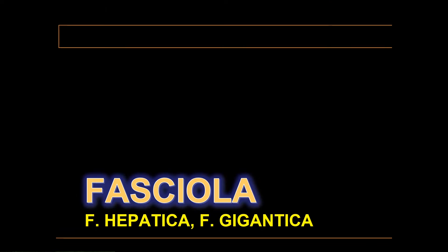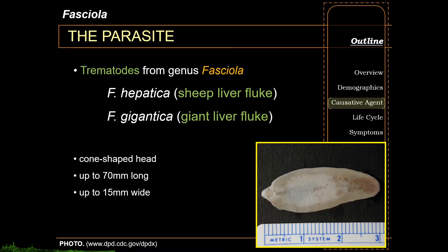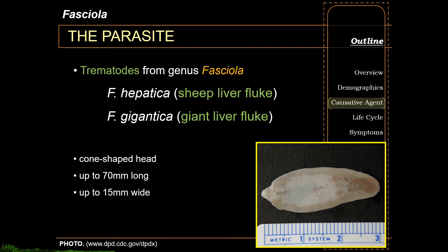The first group of liver flukes is the Fasciola group, which includes Fasciola hepatica and Fasciola gigantica. Fasciola hepatica is also known as the sheep liver fluke, while Fasciola gigantica is also known as the giant liver fluke. Liver flukes are quite large relative to other flukes — they can grow up to seven centimeters long and up to 1.5 centimeters wide. The adult fluke has a very distinct cone-shaped head with prominent shoulders, which delineates the anterior portion from the rest of the body.